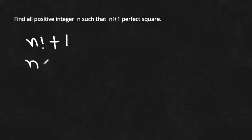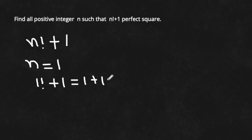First of all, I take n is equal to 1. 1 factorial plus 1 is equal to 1 plus 1, which is equal to 2. And 2 is not a perfect square.